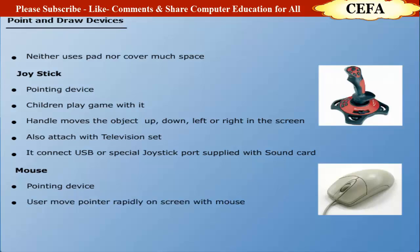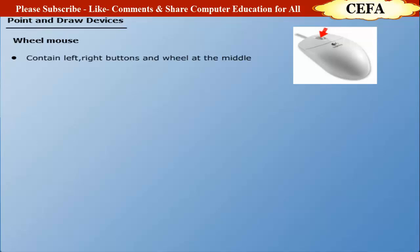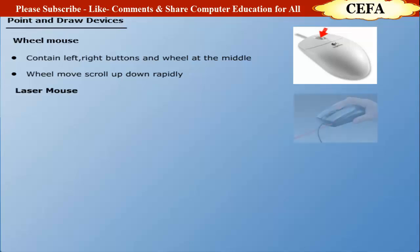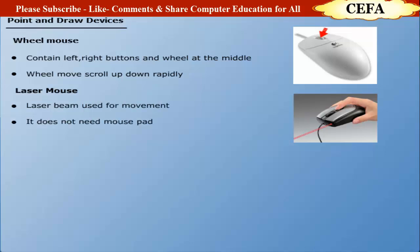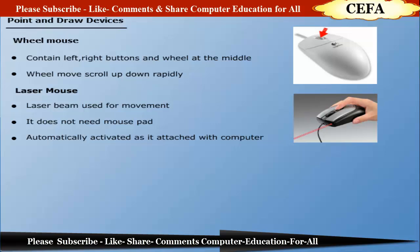Mouse: A mouse is a pointing device. A user can move the pointer very rapidly on the screen with the help of a mouse. It controls the movements of the cursor. There is a variety of mouse available in the market, such as wheel mouse, laser mouse, and wireless mouse. The wheel mouse contains left and right buttons and a wheel button in the middle used to scroll pages up and down rapidly. The laser mouse uses a laser beam for movement and does not need a mouse pad. It is automatically activated when attached to the computer.